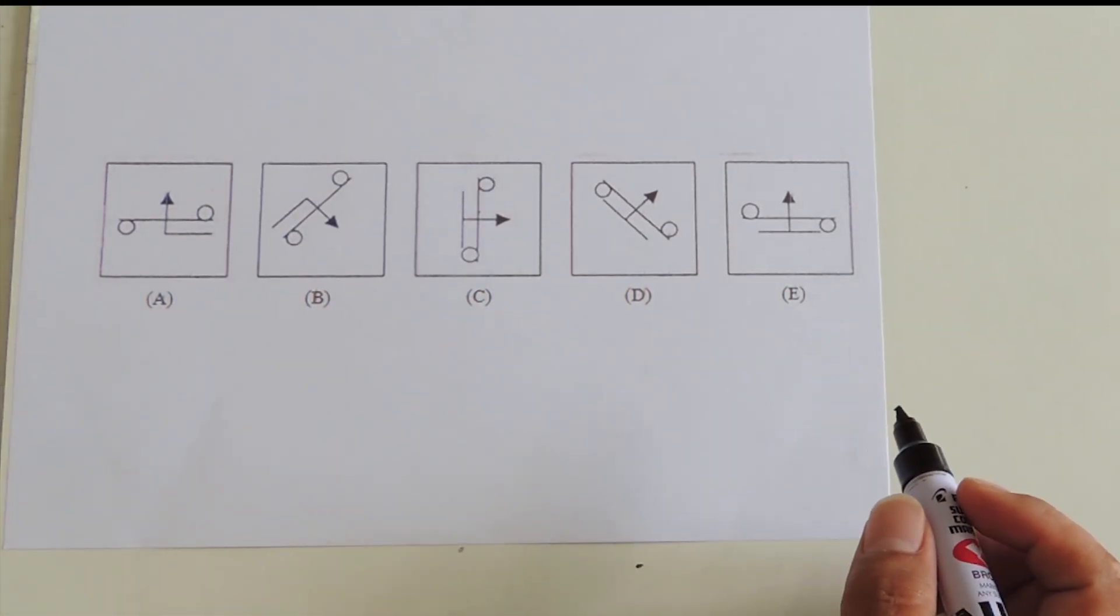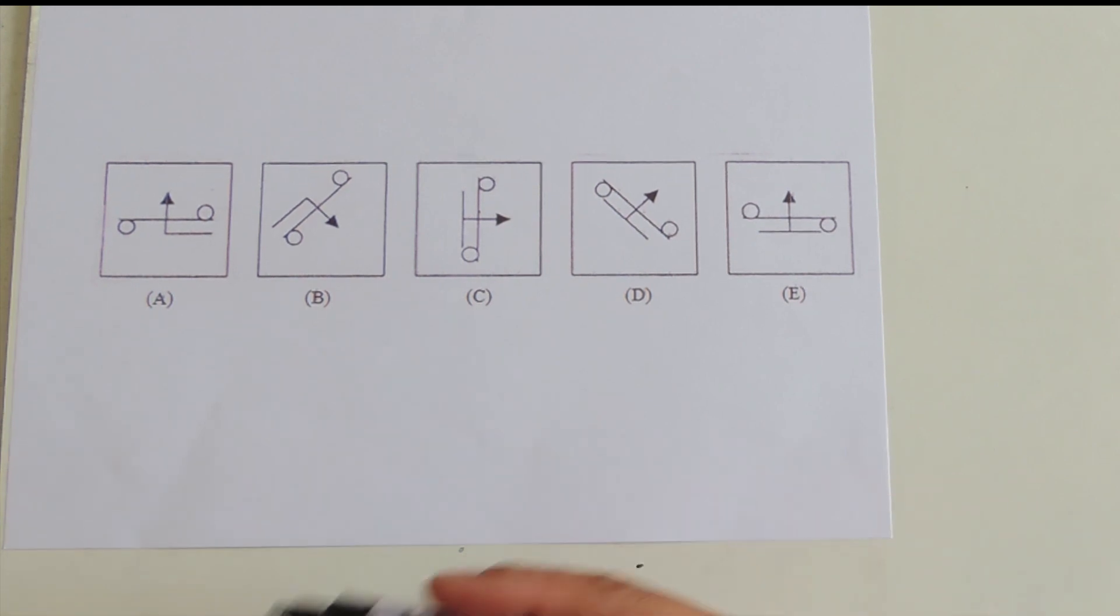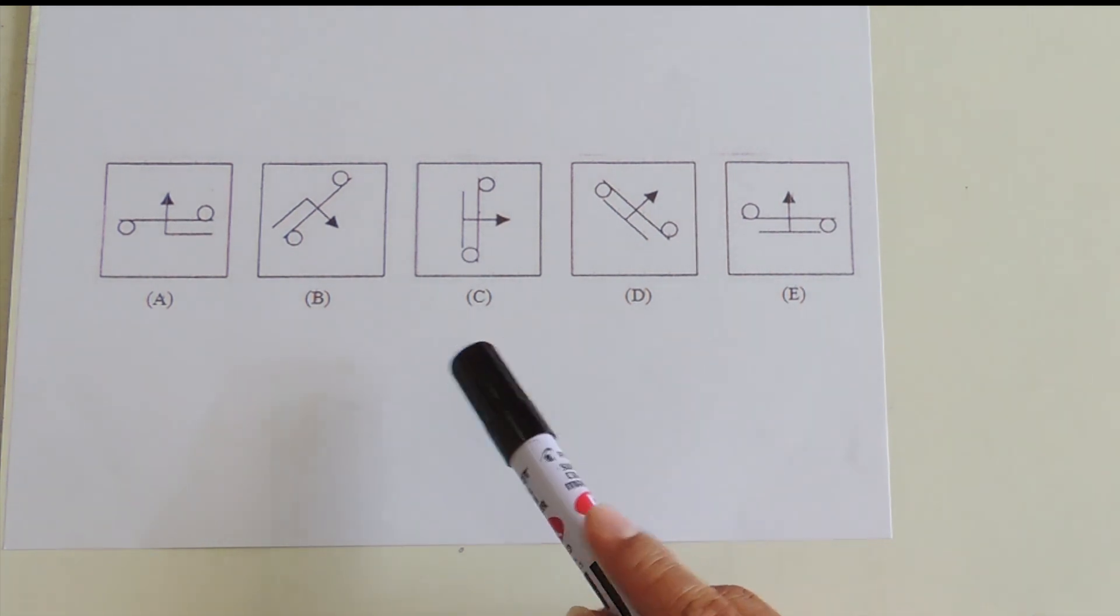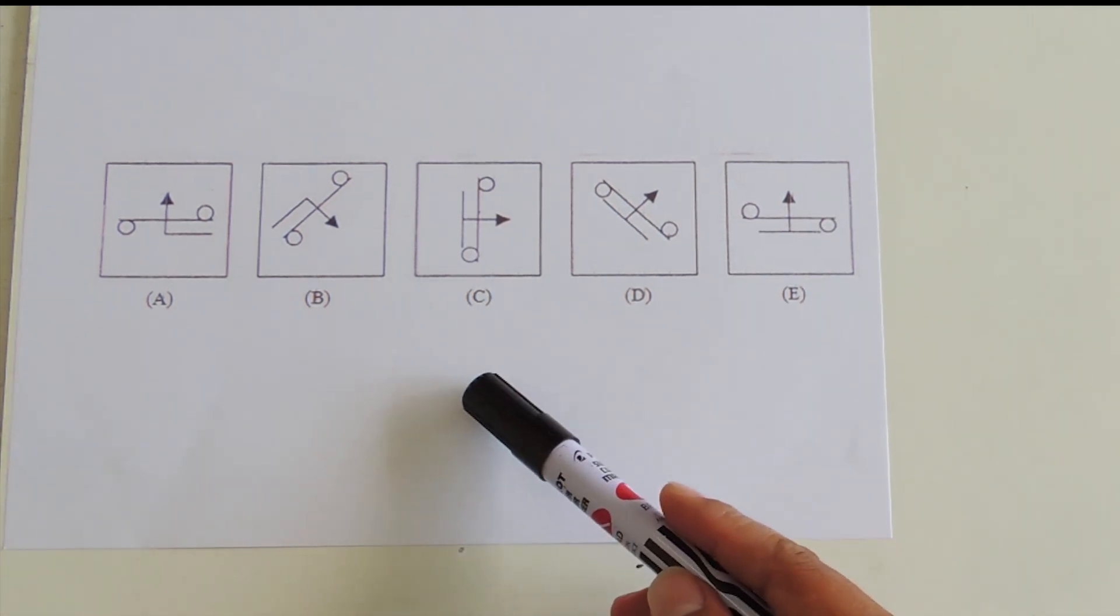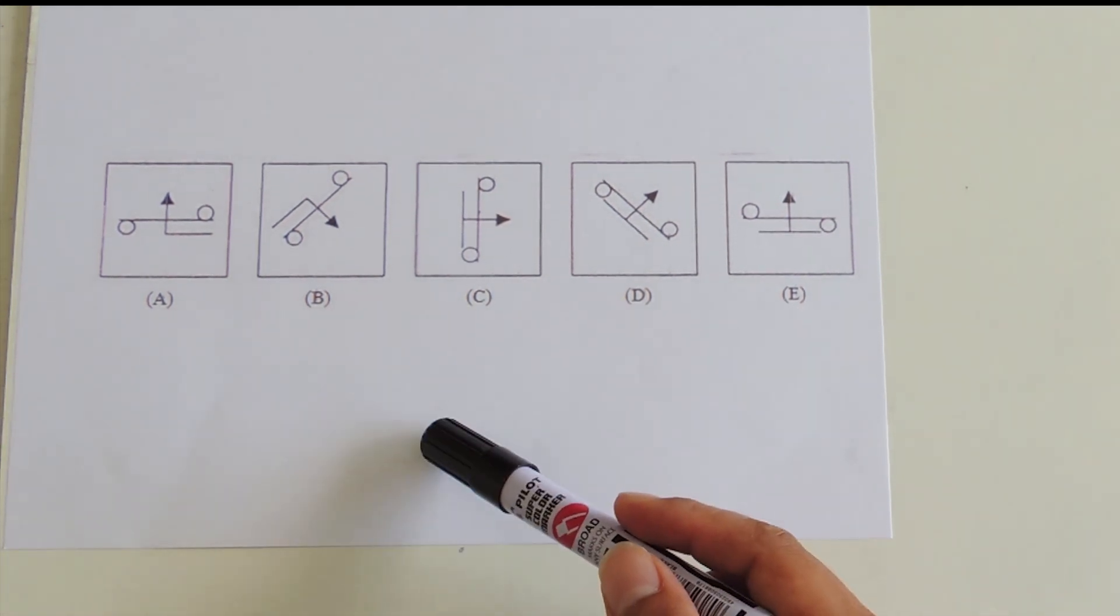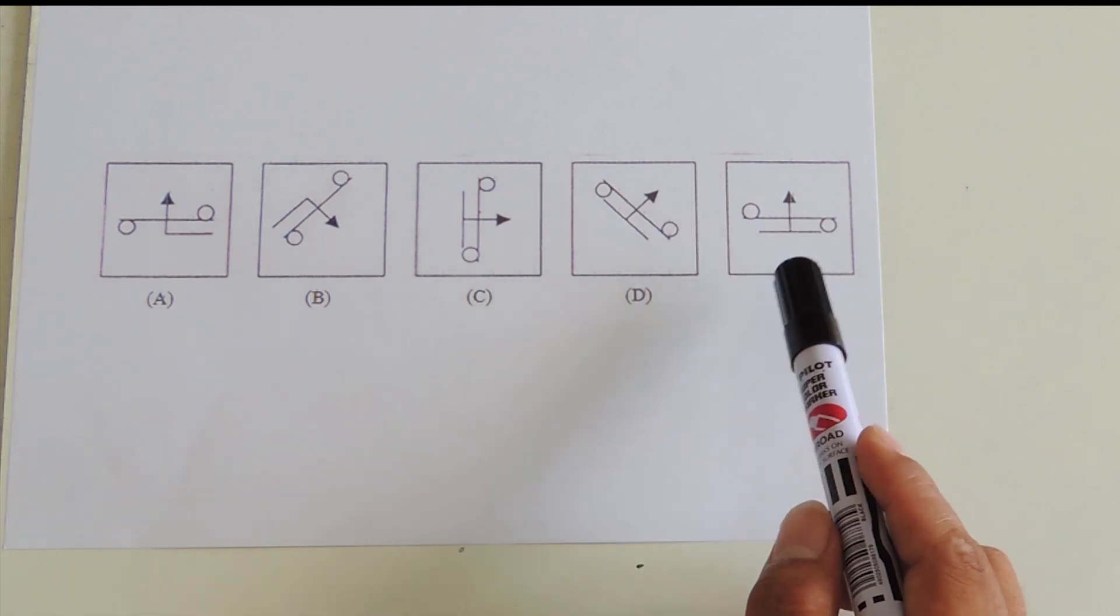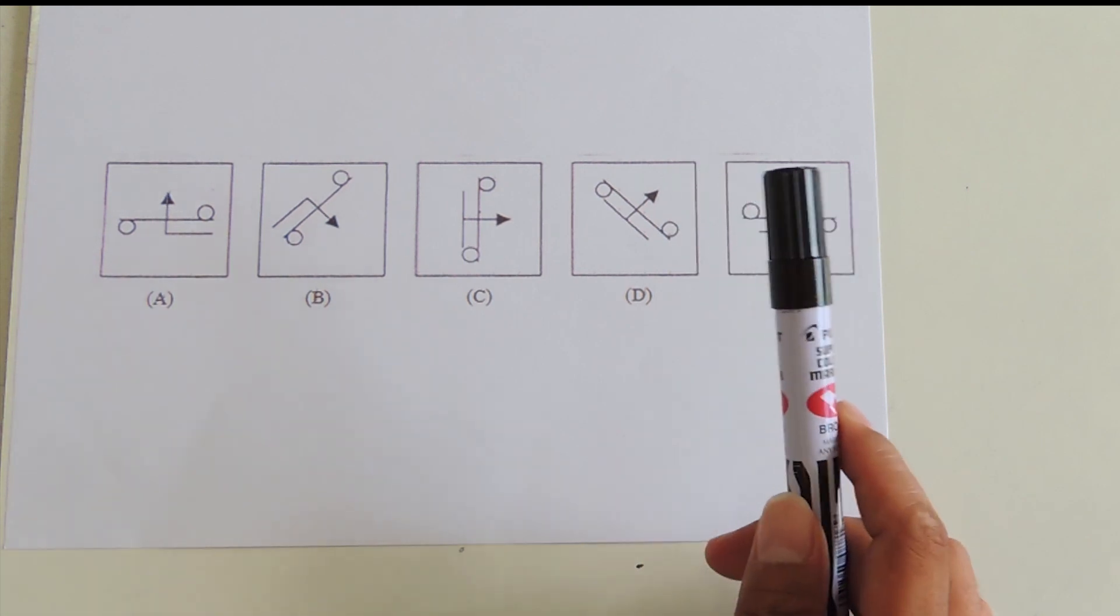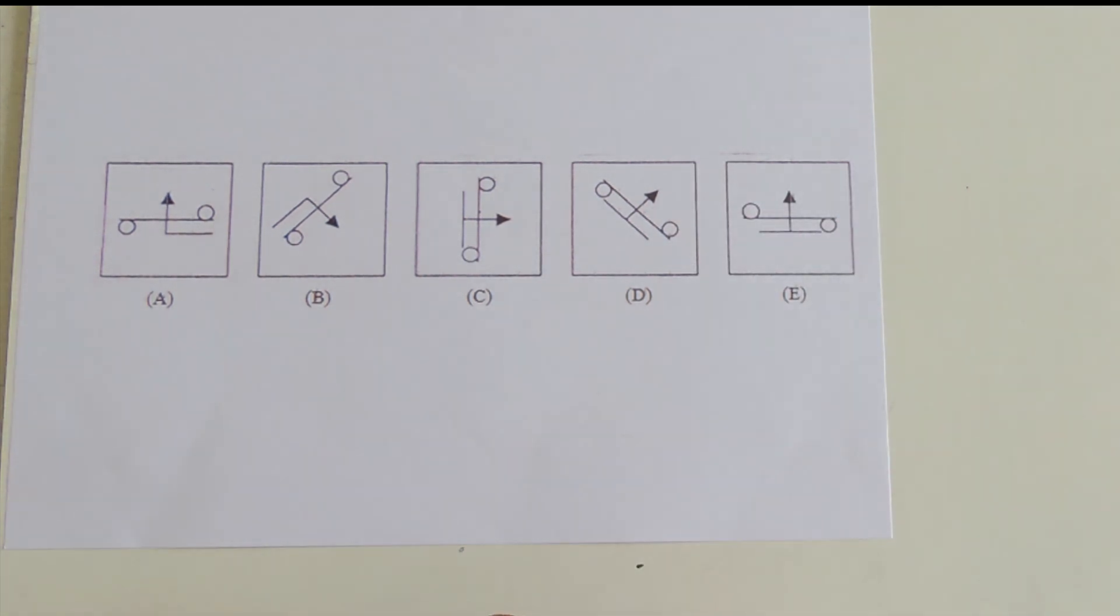For figure grouping, you need to find similarities among four of the figures which are not present in the fifth figure. That fifth figure is the correct answer.